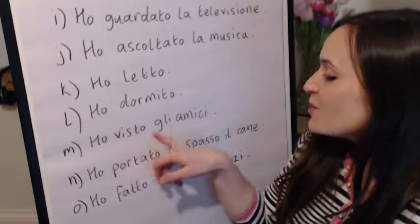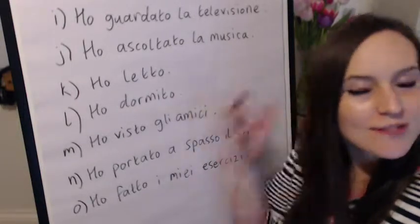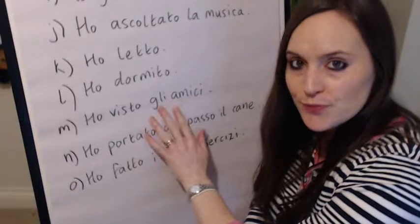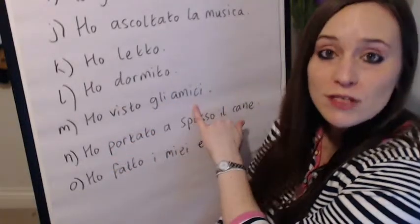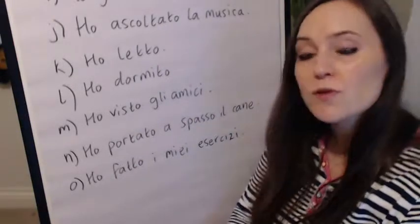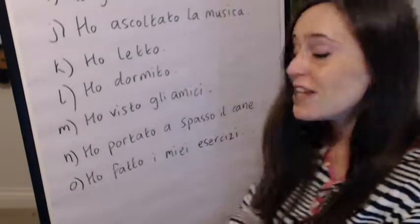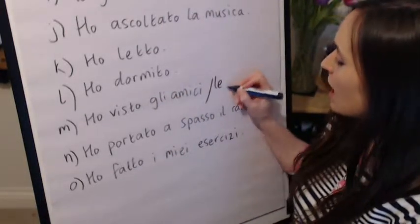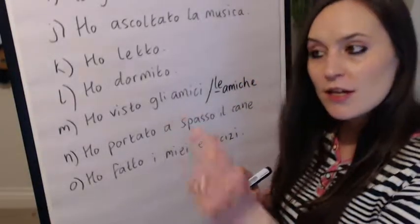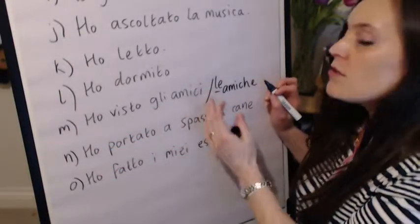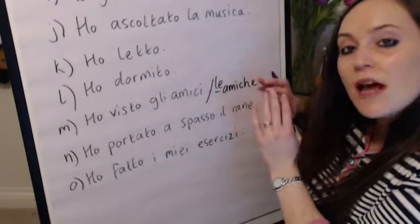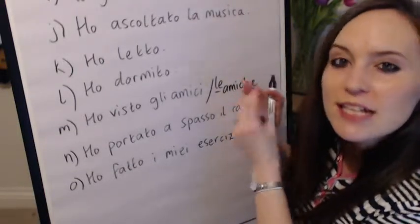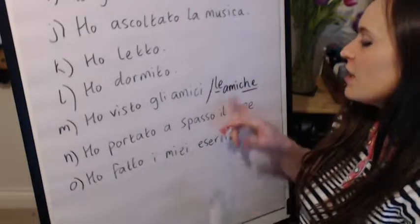Ho visto gli amici — I saw friends. Gli amici is the masculine plural. If you saw a bunch of male friends: ho visto gli amici. If you saw a bunch of ladies: ho visto le amiche. Amica in the plural for a female friend becomes amiche — C-H-E — because if it were just a C and an E together it would change the sound, so I need to keep that hard C. Le amiche — bunch of girlfriends.